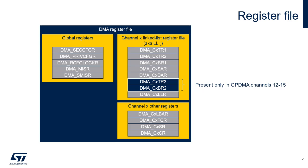The channel-related registers are split into the channel-linked list register file that can be updated during a link, and the other registers that are not affected by links. The registers CX-TR3 and CX-BR2 are only present in the GPDMA channels 12 to 15.